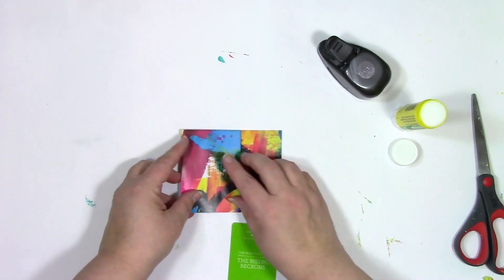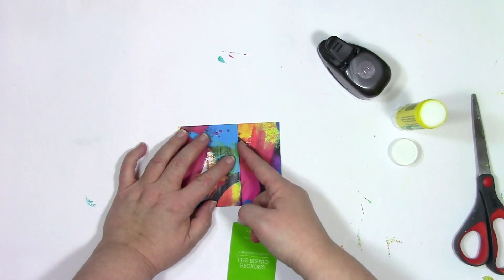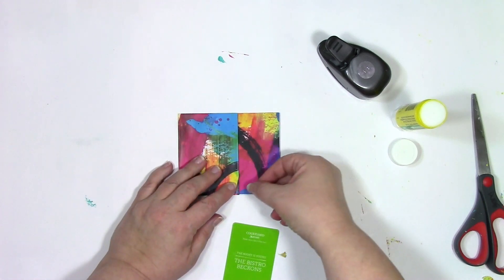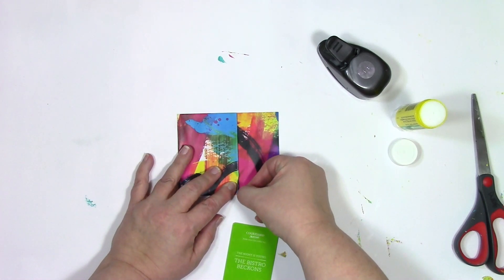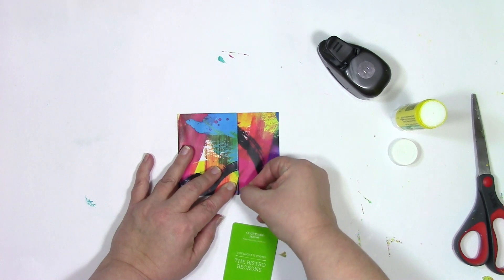Now the tricky part is to fold the other side of it. How am I going to mark that? I am going to use a very fancy tool called the fingernail, and I'm going to make an indentation in the paper there.